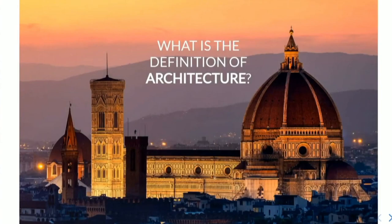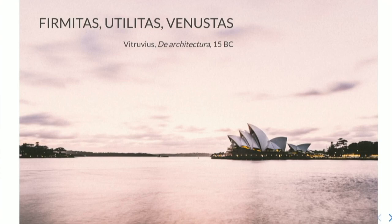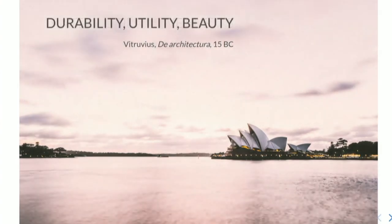Today it's a talk about the clean architecture. I want to start with a question, thinking a bit about what architecture is. I found this in a book called De Architectura, written a couple of thousands years ago. Vitruvius, who was a Roman architect and engineer, says that architecture is about firmitas, utilitas, and venustas, which translated in modern English is durability, utility, and beauty.